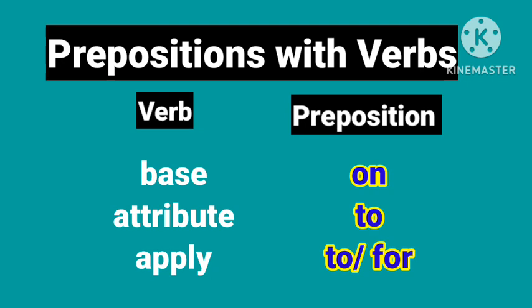Whenever you use the verb 'base,' you have to use the preposition 'on,' so you will never be wrong. The verb 'attribute' is used with the preposition 'to' — attribute to. The verb 'apply' is used with the preposition 'to' and 'for' depending on context — apply to, apply for. Memorizing can help you use prepositions confidently and reduce your mistakes. So many English learners are using this method, and trust me, it works.